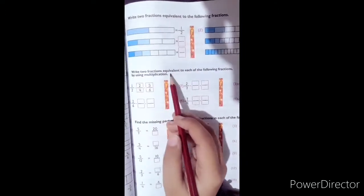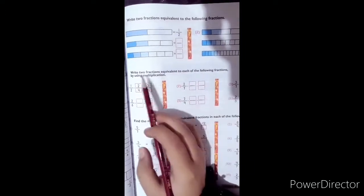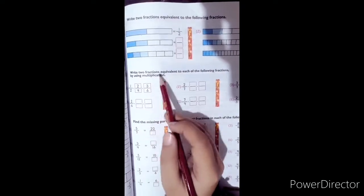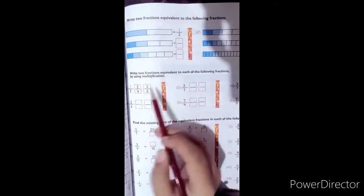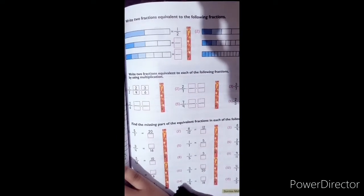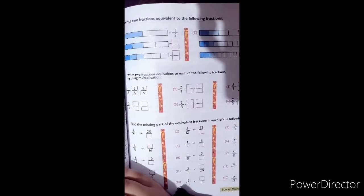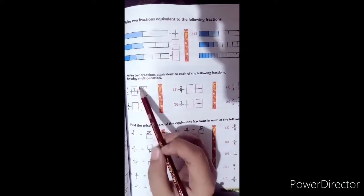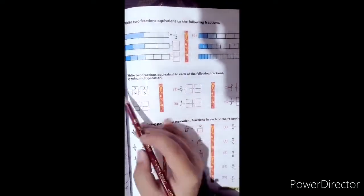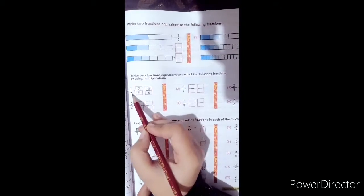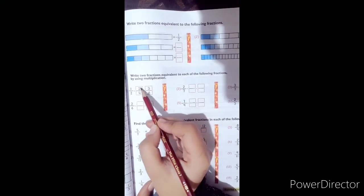Write two fractions equivalent to each of the following fractions by using multiplication. First, what is equivalent fraction? Equivalent fraction is when we multiply the numerator and denominator by the same number. Here we have 1 by 2. If we look at the next fraction, this is 2 by 4.